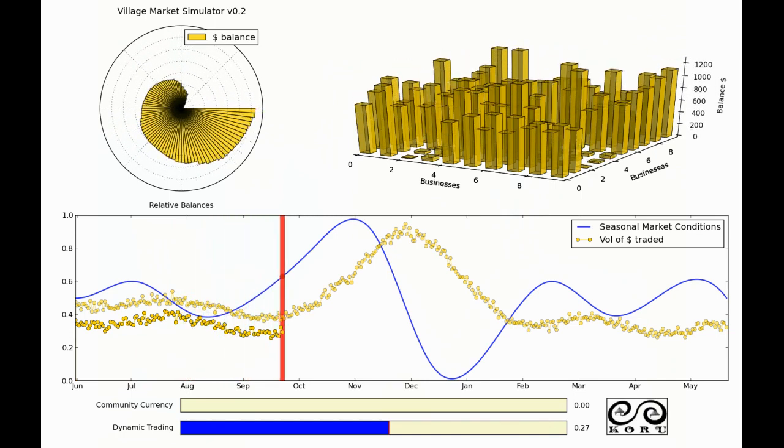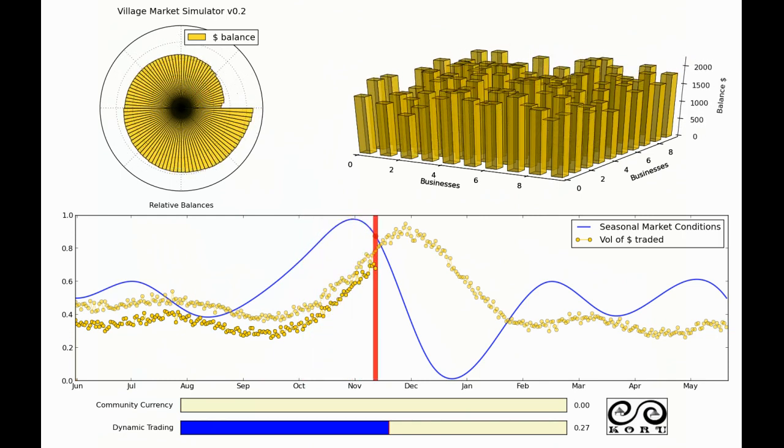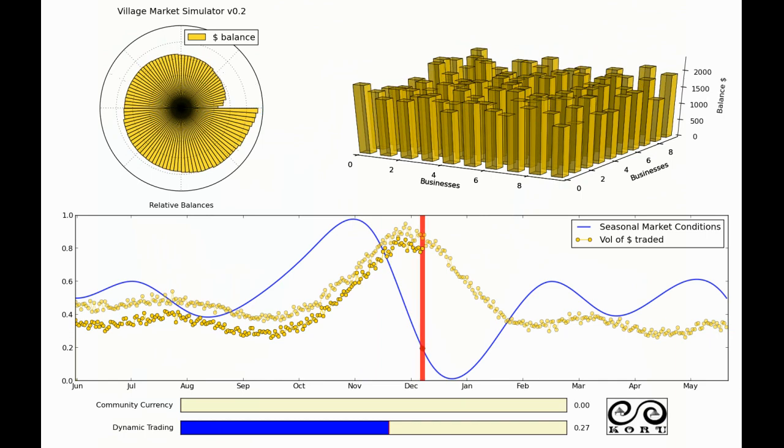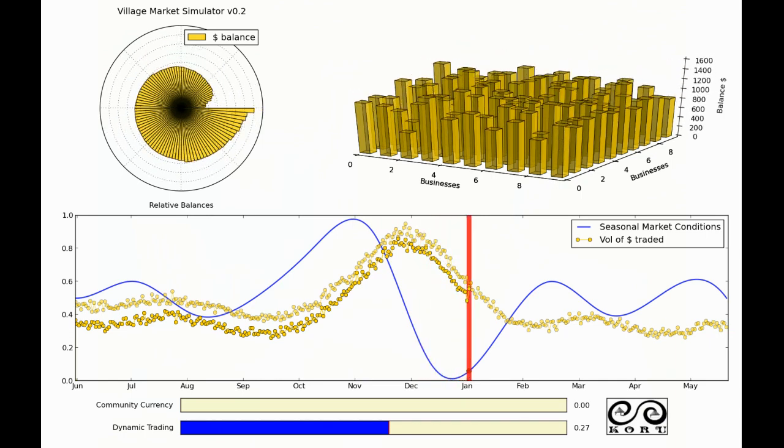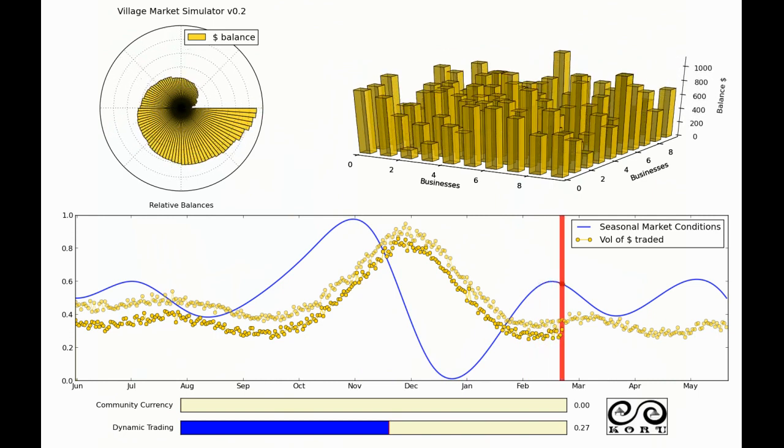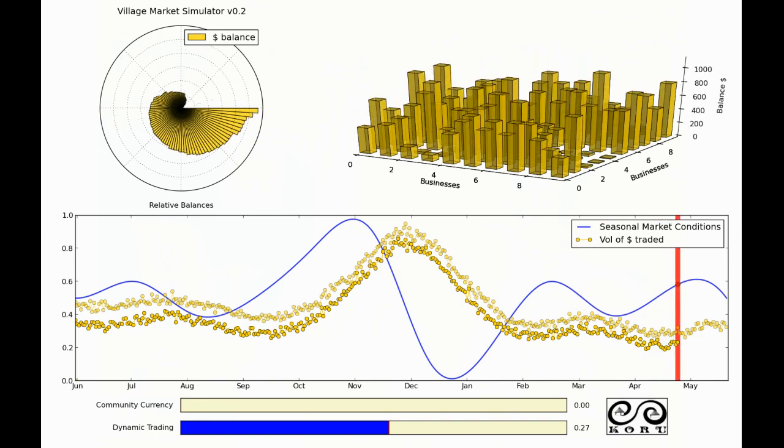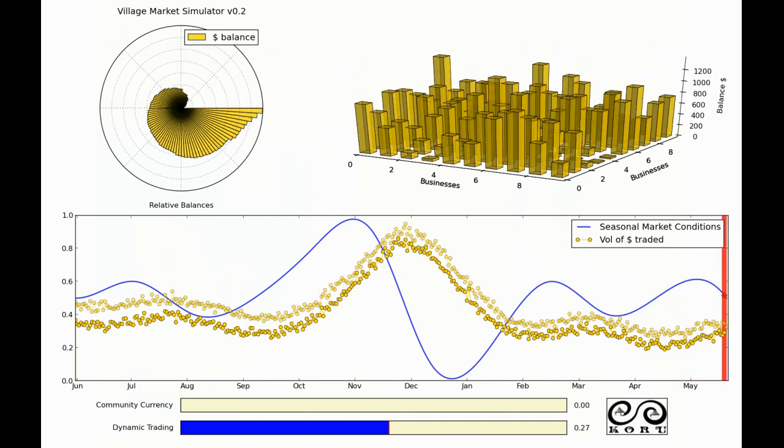So very quickly we're going to run this forward. In the upper left here I've plotted all the balances of each business around a circle just to look at comparative amounts of wealth in the community. So this is a fairly equal community. There's no bankers here, no interest-bearing loans or anything like this. It's just a very typical market maybe say a hundred years ago.